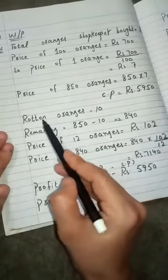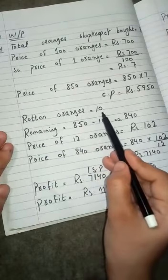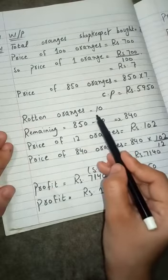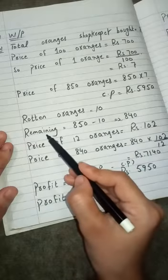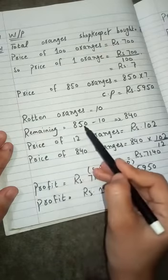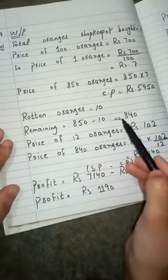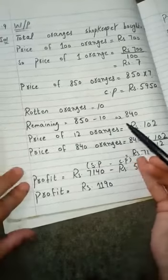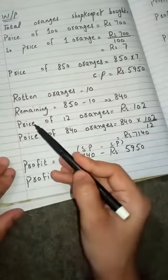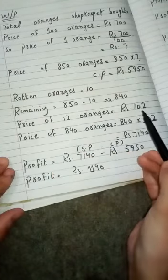Now the point is that rotten oranges is equal to 10. 10 oranges were found rotten. So we are going to subtract it. Remaining oranges: 850 minus 10 is equal to 840. The next point is that if price of 12 oranges is 102.